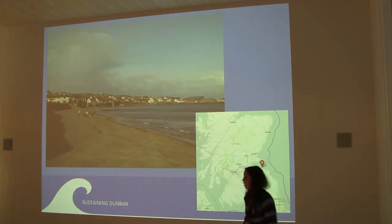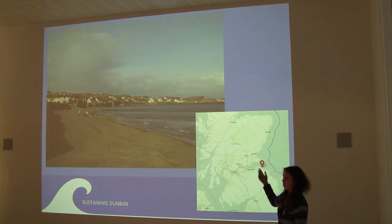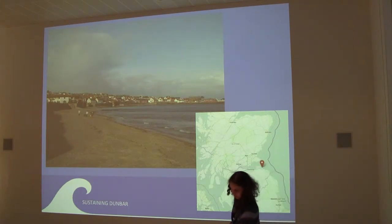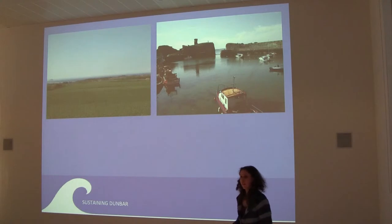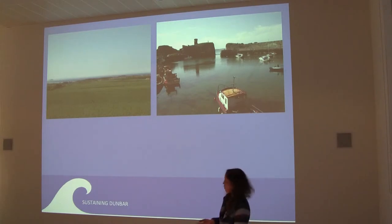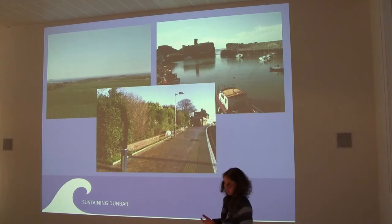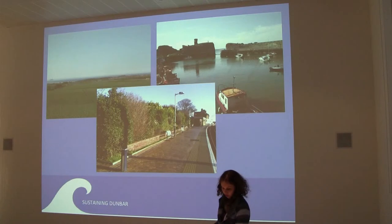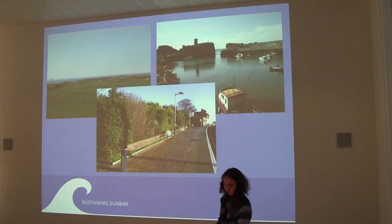Dunbar is a small town on the east coast of Scotland. It's a coastal town with a population of about 8,000. Traditionally it's a farming and fishing community. There are a lot of new residents, and it's a good way into Edinburgh, so it's started to become something of a commuter town. The railway link is really important to us.